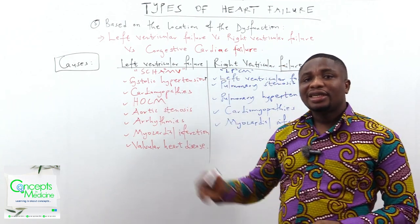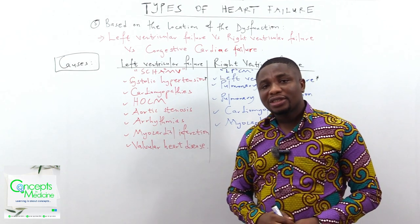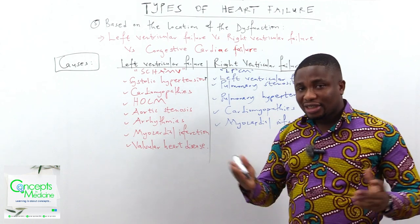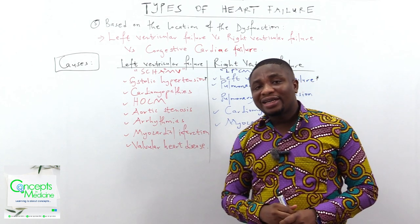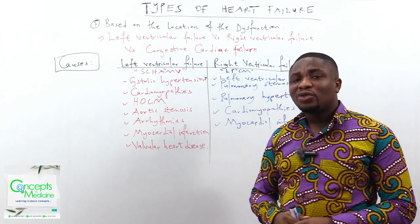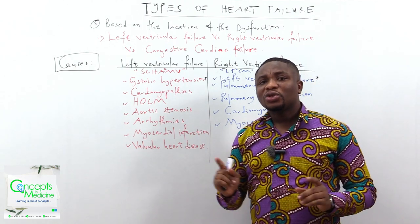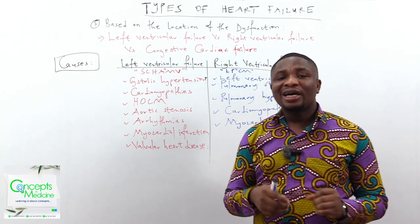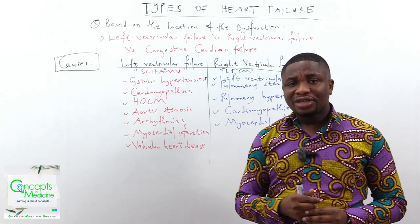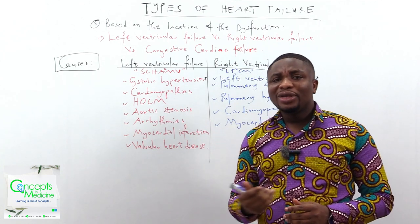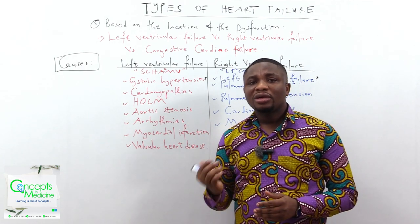The remaining causes in SCAMV are: cardiomyopathies, hypertrophic obstructive cardiomyopathy, aortic stenosis, arrhythmias (supraventricular tachycardia and ventricular tachycardias), myocardial infarction, and valvular heart disease (regurgitations and stenosis). Left ventricular failure is also subdivided into heart failure with preserved ejection fraction, heart failure with mid-range or mildly reduced ejection fraction, and heart failure with reduced ejection fraction.